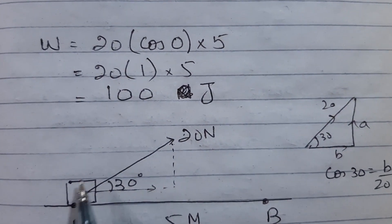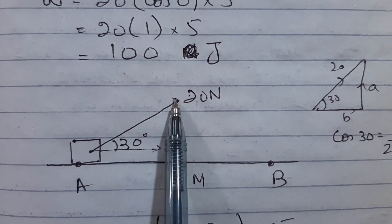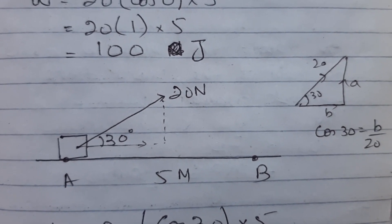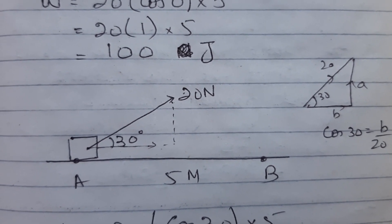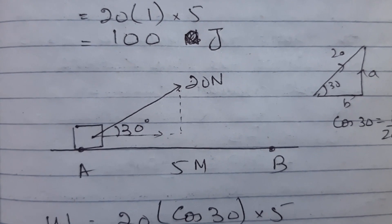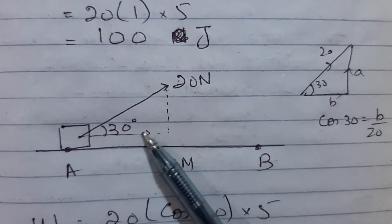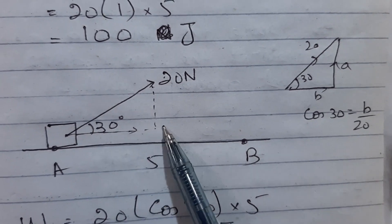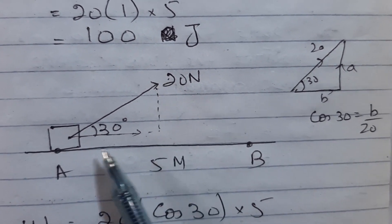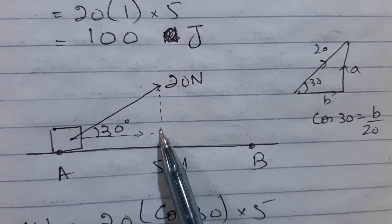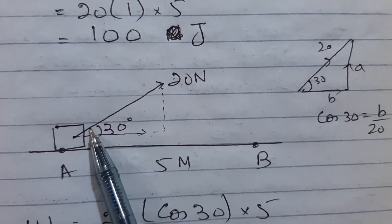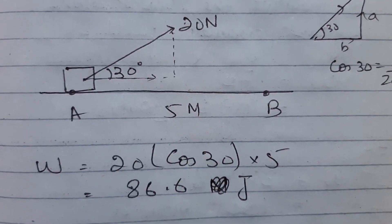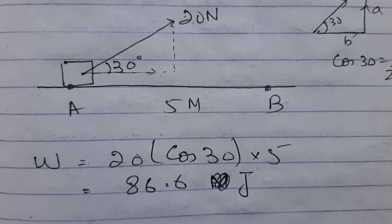Now take the same scenario but with force applied at 30° to the horizontal. You are still covering 5 metres with 20 N force, but work done is the component of force in the direction of motion multiplied by distance. You resolve horizontally: 20 cos30° (horizontal component) and 20 sin30° (vertical component). Since motion is horizontal, work done = 20 cos30° × 5 = 86.6 joules.